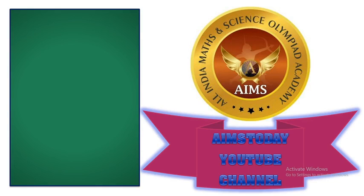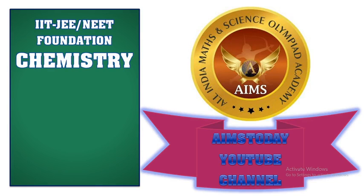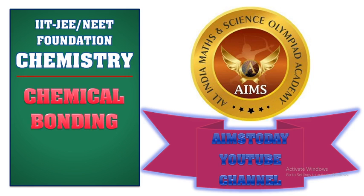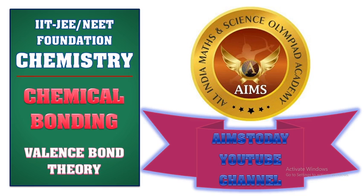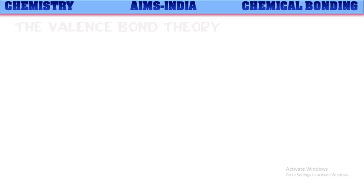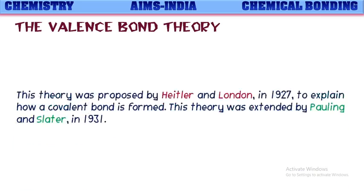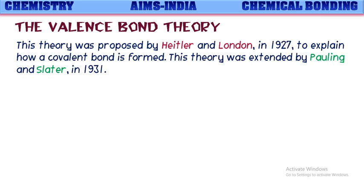Hello friends, welcome to AIMS Today YouTube channel. In this video we are going to discuss about IATJ Neid Foundation chemistry, chemical bonding chapter — specifically about Valence Bond Theory. This theory was proposed by scientists Heitler and London in 1927 to explain how a covalent bond is formed. Later this theory was extended by Pauling and Slater in 1931.